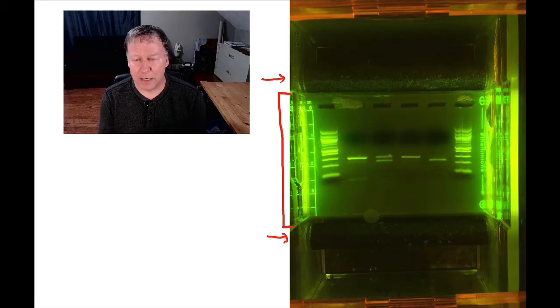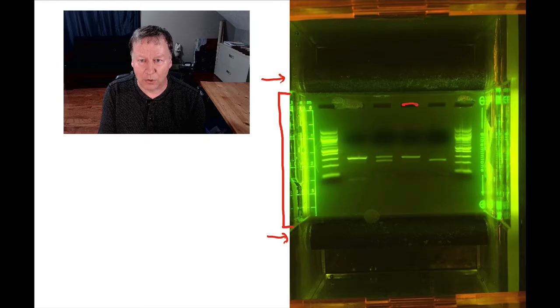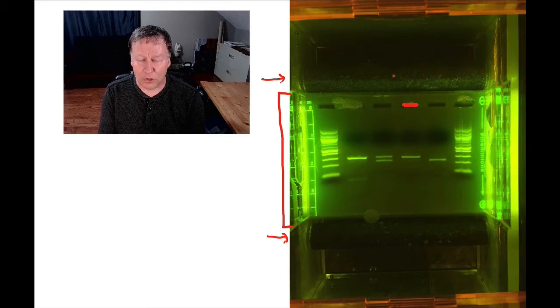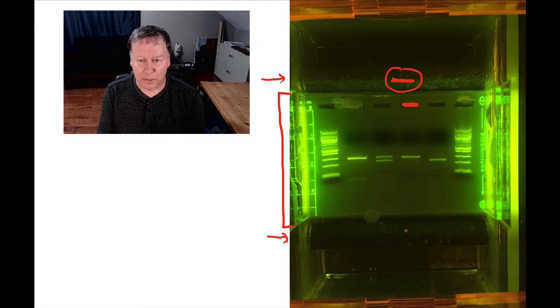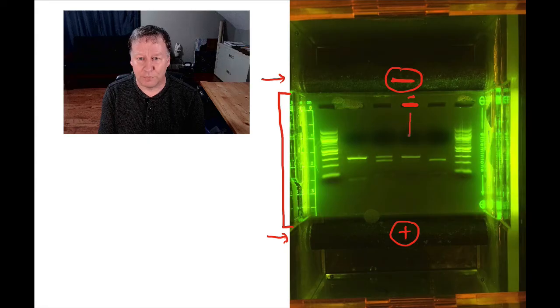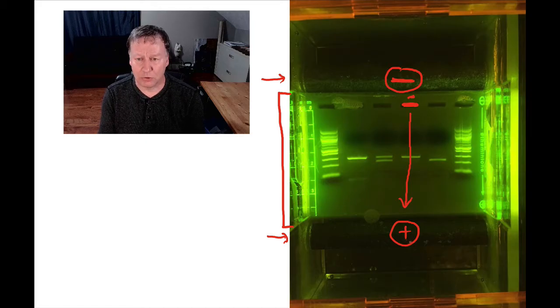When we run a gel electrophoresis, we put a DNA sample inside one of the wells at the top of the gel and turn on the electrodes. The top electrode is negatively charged and the bottom one is positively charged. DNA itself has a negative charge which means it's going to be attracted to the positive charge and the DNA over time is going to move through the agarose and travel toward the positively charged electrode.